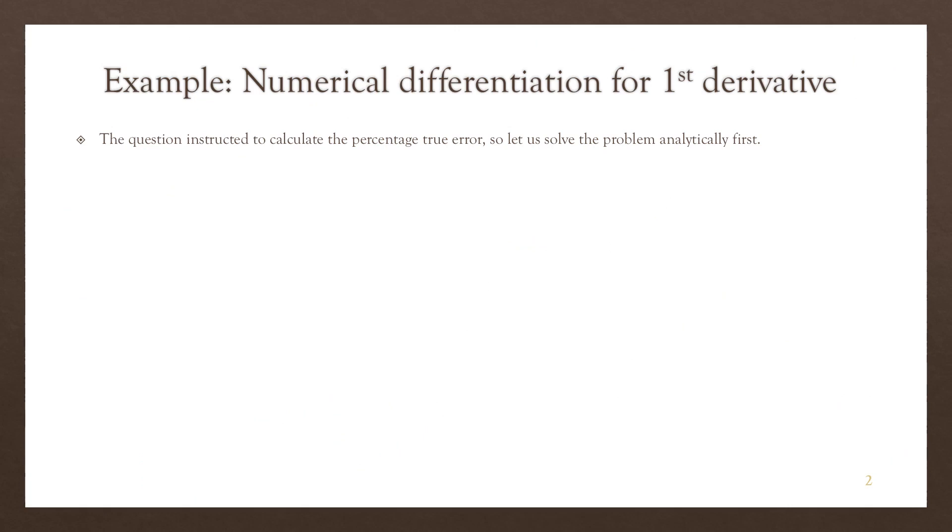Since we need to calculate the true error, of course we need to find out what is the value of the first derivative at 0.5 using analytical method. So we find the first derivative analytically, and then we simply substitute 0.5 into the first derivative expression, in which we will get 1.075.